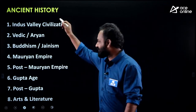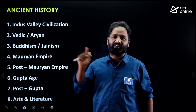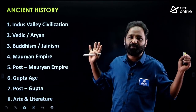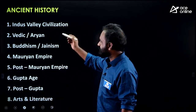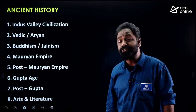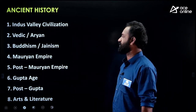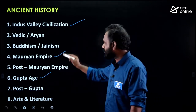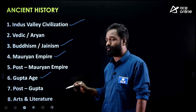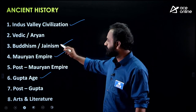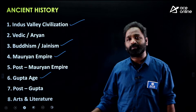For Ancient Indian History — looking at the chapters, don't worry or panic. The chapters include Indus Valley Civilization, Vedic Civilization, Buddhism, Jainism, Mauryan Empire, Post-Mauryan Empire, Gupta Age, Post-Gupta, Arts and Literature. My recommendation is: give top priority to Gupta, then Indus Valley Civilization, then Mauryan Empire, then Buddhism and Jainism. Read all chapters but give these four the highest priority.